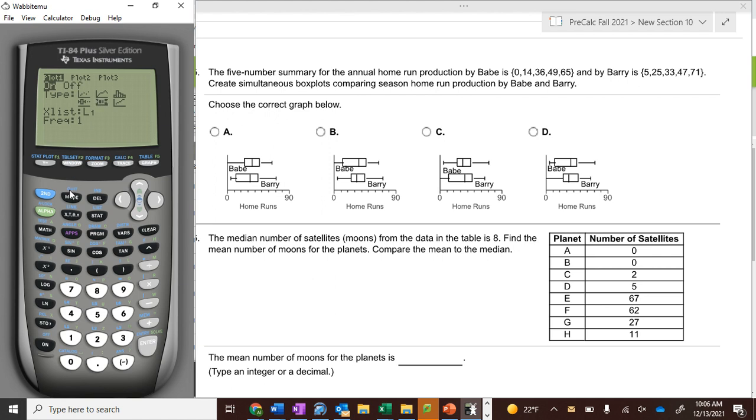Then for plot two, I'll go second stat plot, then I'll turn on plot two and do the same thing. But then this one will go off of L2 instead of L1. So I'll arrow over, go down, and then second, and L2 is the number two. If you hit second L2, enter, enter.